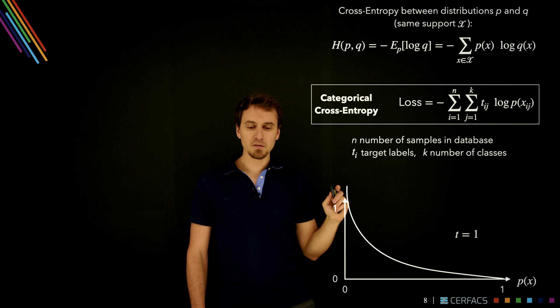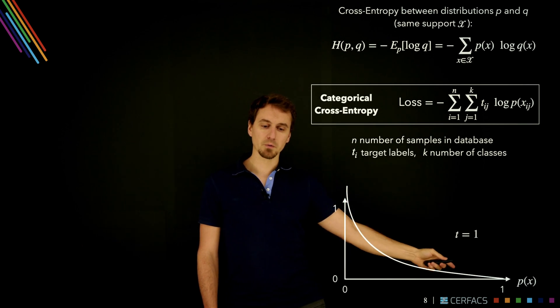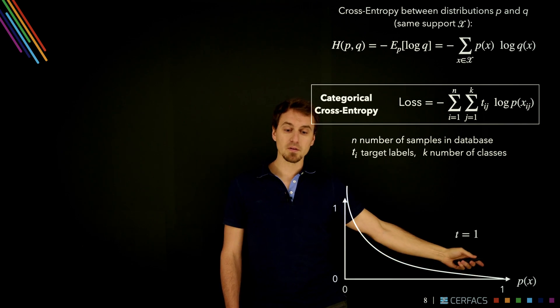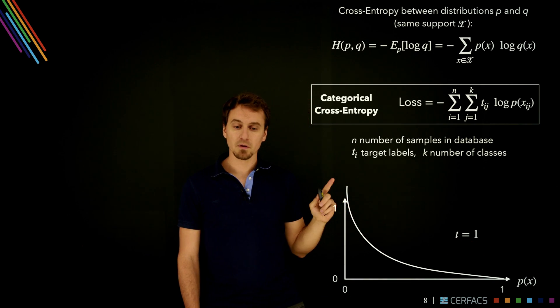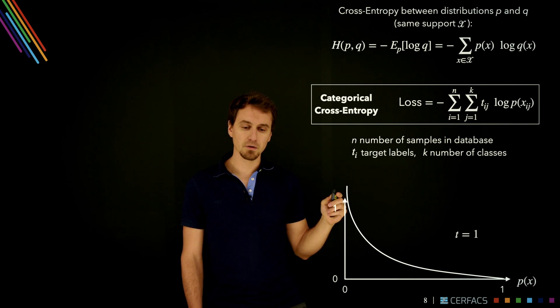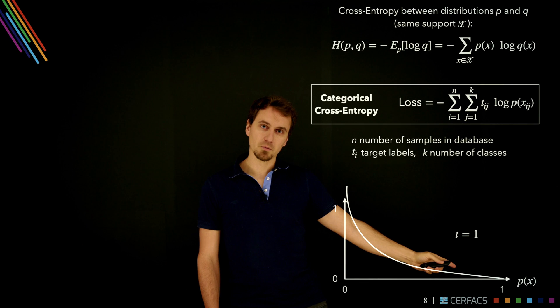So this is the shape that this function would have for a given single target class where t is equal to 1. And you can see that there are interesting features here. Since the target is 1, we want the network to output 1. So we want the loss function to be at its minimum, in this case 0 at 1, so that's good. We want it to be at its worst when we're far away, so at 0, and here it diverges to infinity at 0, so that's also good.